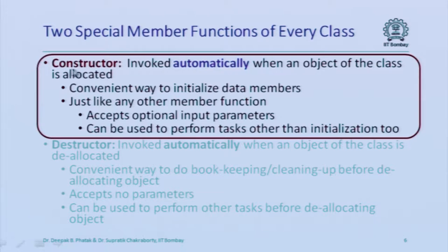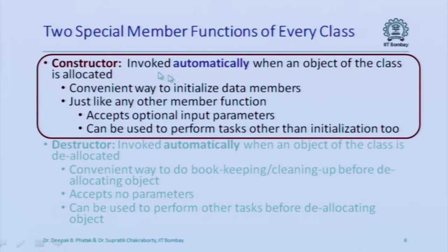The moment an object of a class is allocated, the first thing that happens is the constructor member function gets invoked, and then you have access to it and can do whatever you want with it. Because this constructor member function gets invoked immediately after allocation of the object, it is a very convenient way to initialize the various data members inside the allocated object — it gets called immediately after allocation before you can do anything else. Constructor member functions are special member functions invoked on the parent object immediately after the parent object is created. The rest is just like any other member function.